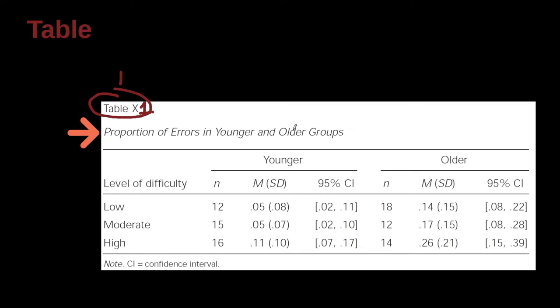And then we have the title down here. So proportion of errors in younger and older groups. And then we've got the stack here, the deck going on here. And then we've got younger and older, but then they're divided up into more data here.